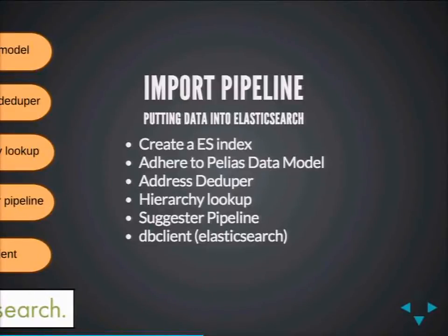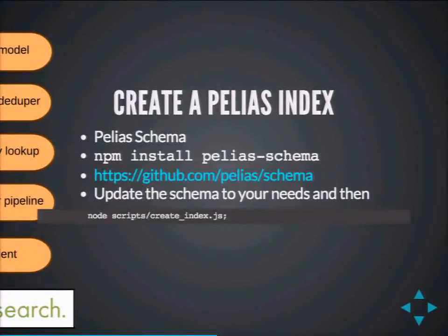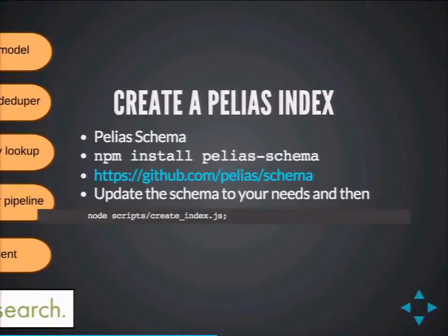First, you create an Elasticsearch index — think of it like a table in a traditional database, where all documents go. It contains required mappings along with settings like number of shards, replicas, and the kind of analysis to perform on various fields, such as synonym expansion. For example, a synonyms file can specify that 'ST' expands to 'street,' 'STA' to 'station,' or 'STA' preceding certain words to 'saint.' This is handled by the Pellius Schema NPM module, which you can fork and modify if needed.